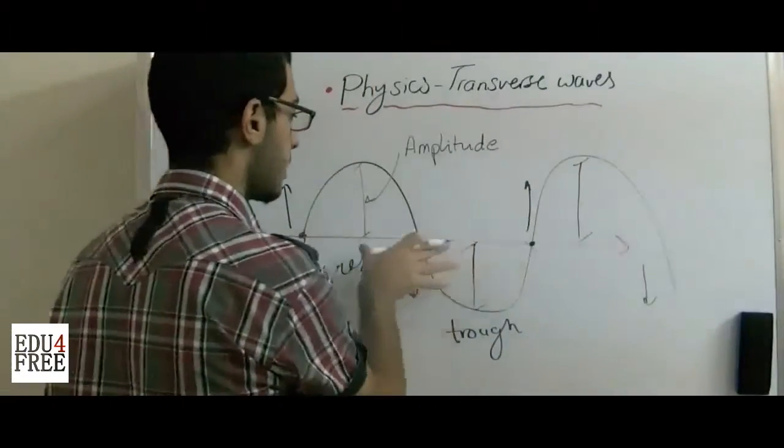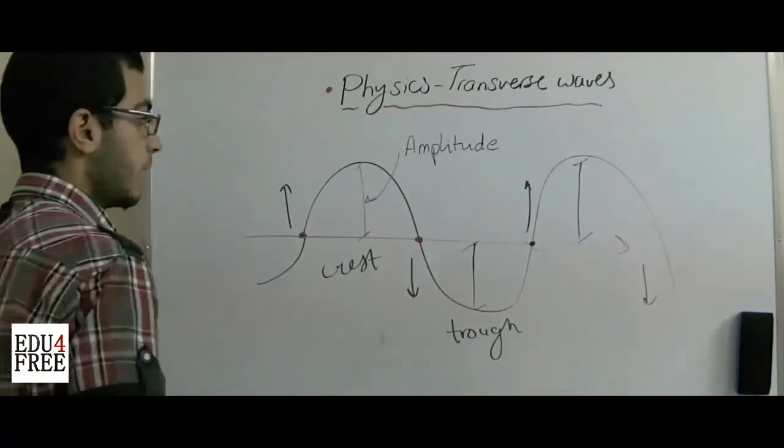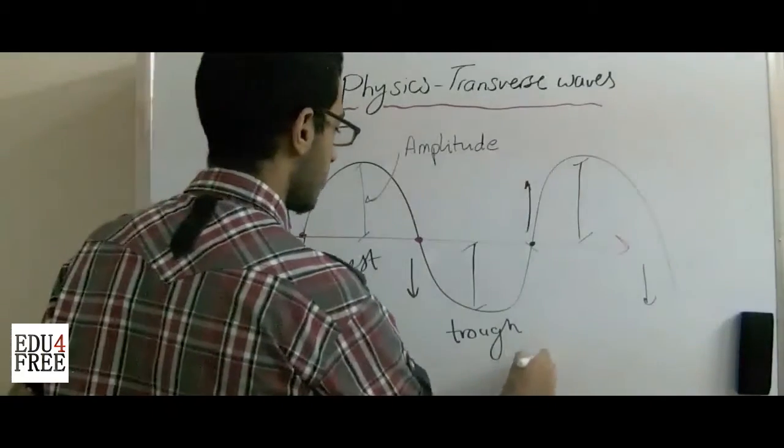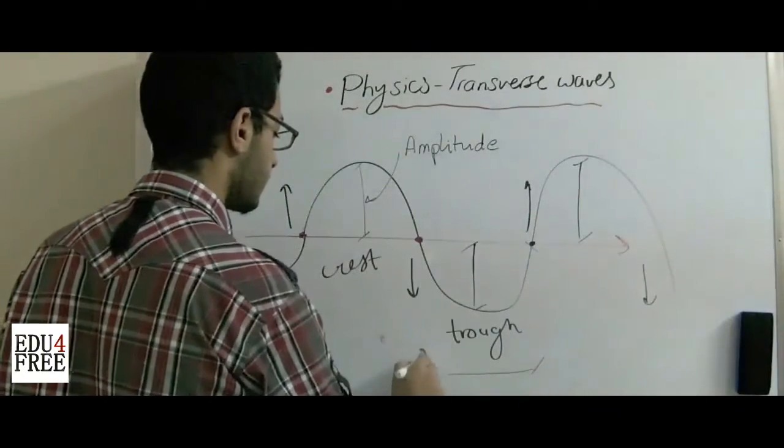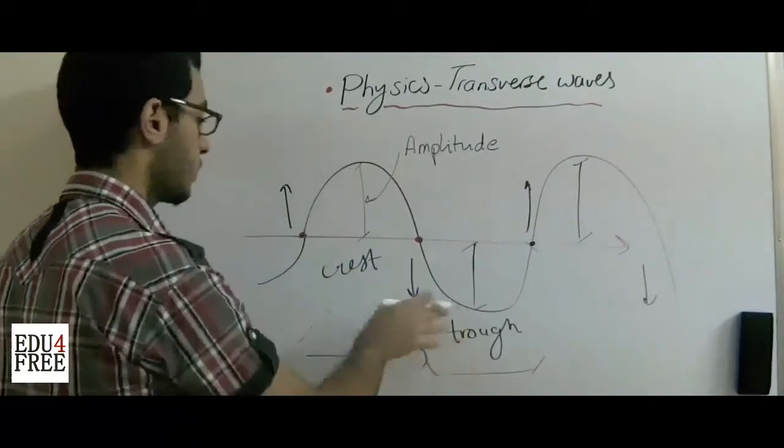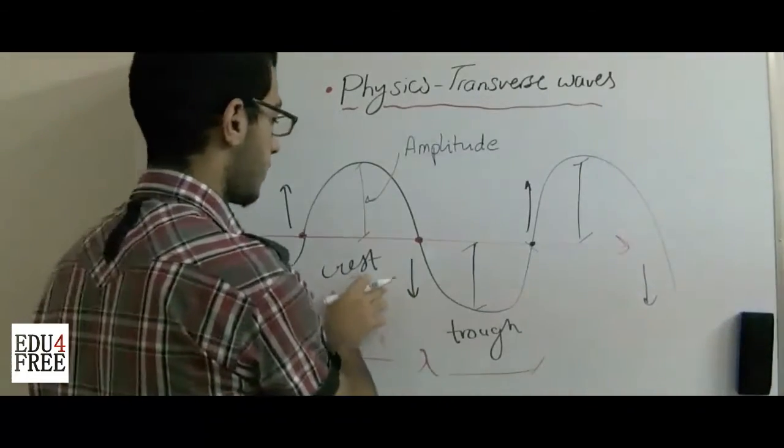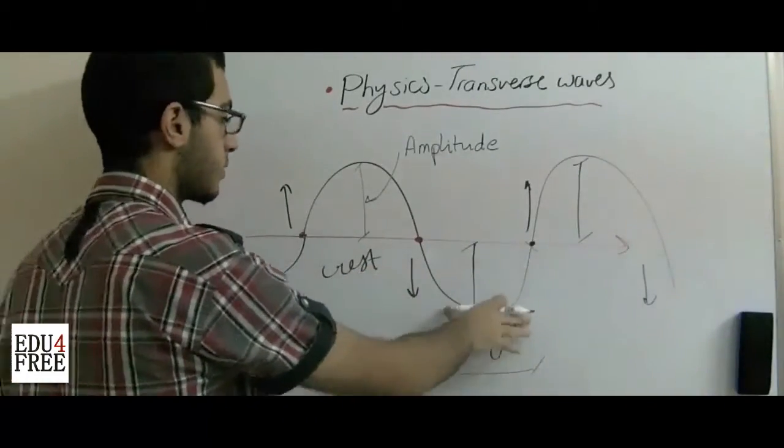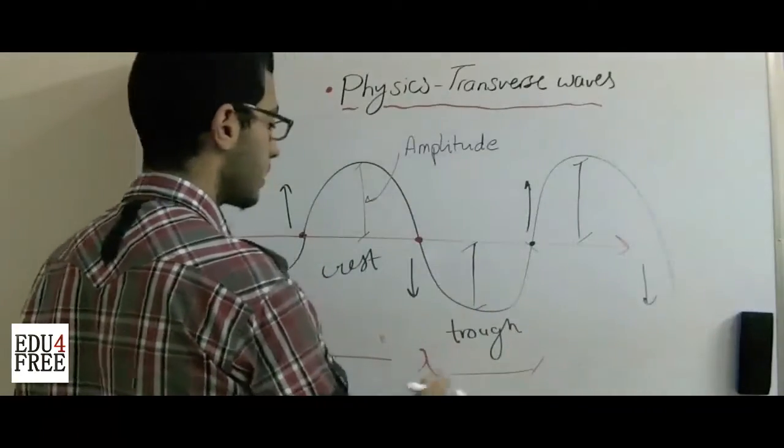So this is a complete oscillation. And also this is the wavelength of the wave. Distance between two successive crests and troughs is called the wavelength.